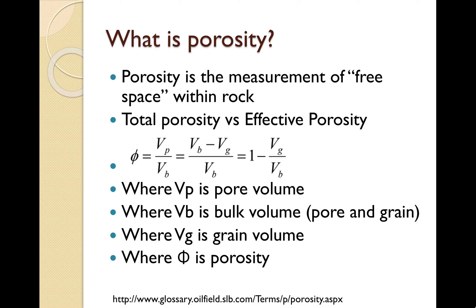Porosity is denoted by the symbol phi and the general equation used to calculate porosity is the volume of the pores divided by the volume of the bulk. Or in terms of grain and bulk volume, the equation is 1 minus volume of the grain over volume of the bulk.